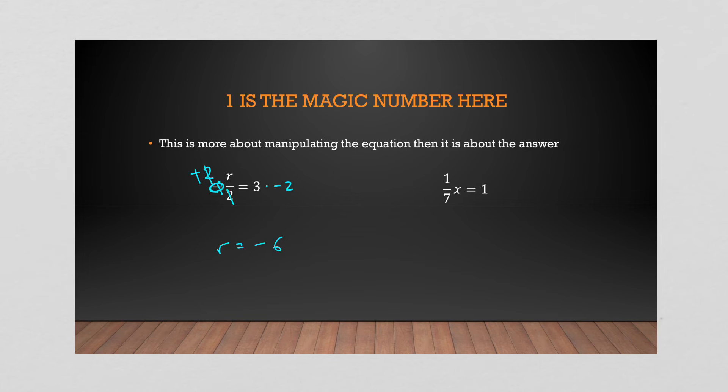Now I put this one in here just to help you out. X over seven is the same as one over seven times X, because that means one over seven times X over one. And you're multiplying tops, tops, bottoms, bottoms. So if you see X over seven, know that it is exactly the same as one over seven times X.